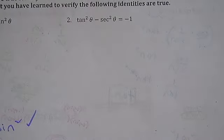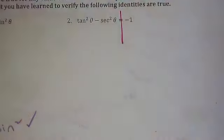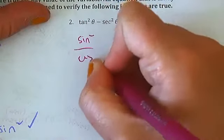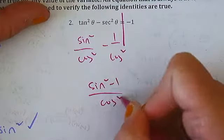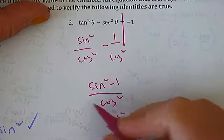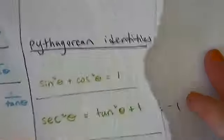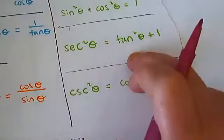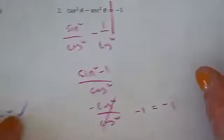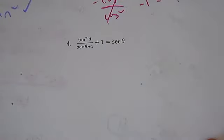All right, doing this again — you can only work with one side. I'm going to choose the left. You can go in and start replacing: tan squared is sine squared over cosine squared, secant squared is one over cosine squared, combine the two fractions — top equals bottom, that's negative one equals negative one. Or recognize this is a manipulated Pythagorean identity — subtract secant squared to both sides and subtract one to both sides, and you get that identity right there.